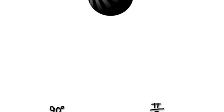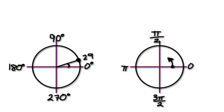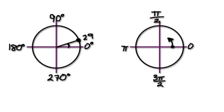In this video, I will show you how to convert degrees into radians. So let's start off with an example: how would you convert 29 degrees into radians?